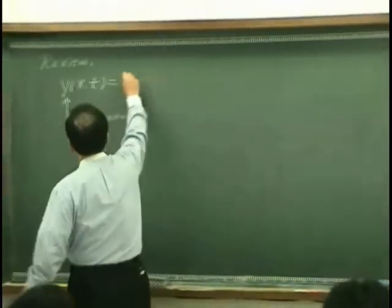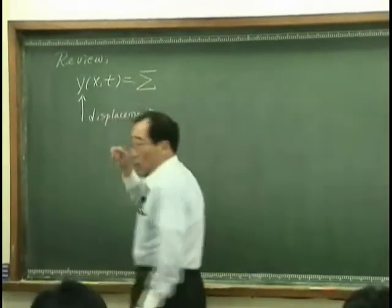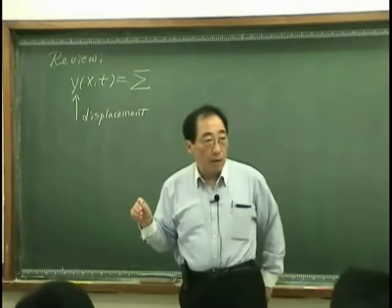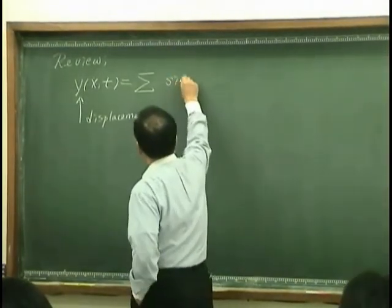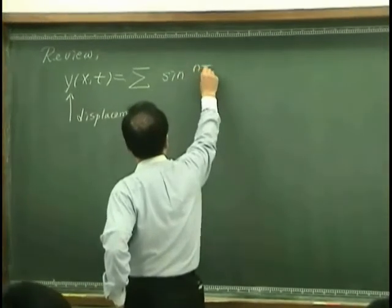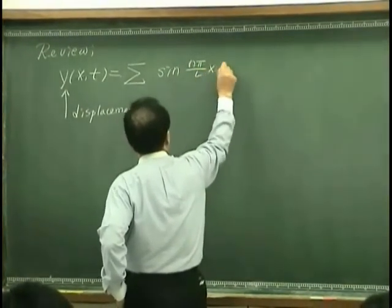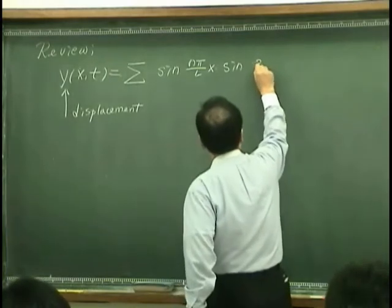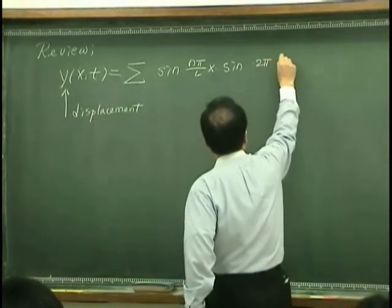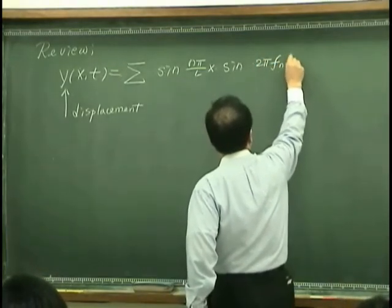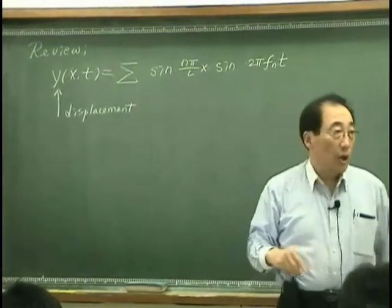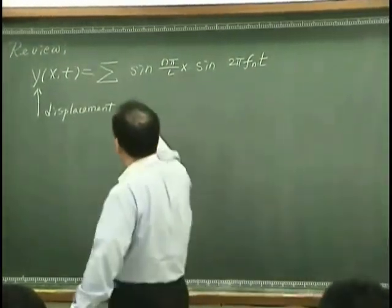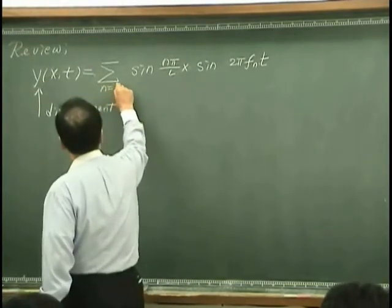That can be expressed as the sum of many sine waves. For example, sine m pi over l x, sine 2 pi f n t, and n is the index that expresses the mode.